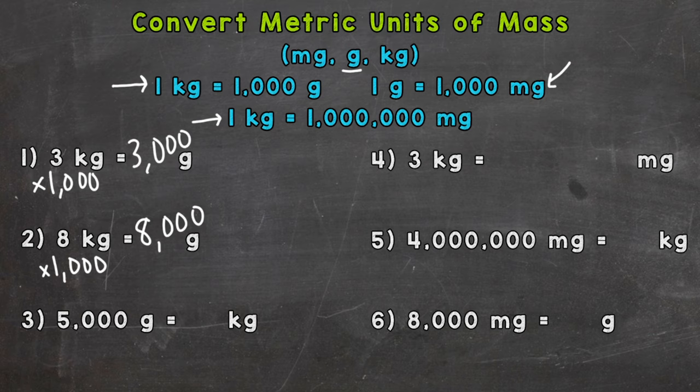For number three, we're going to go the opposite way — from grams to kilograms. So we start with 5,000 grams, and we need to split that 5,000 into groups of a thousand. Each one of those groups of a thousand equals one kilogram. So when we're going from grams to kilograms, we divide by 1,000. 5,000 divided by 1,000 equals 5.